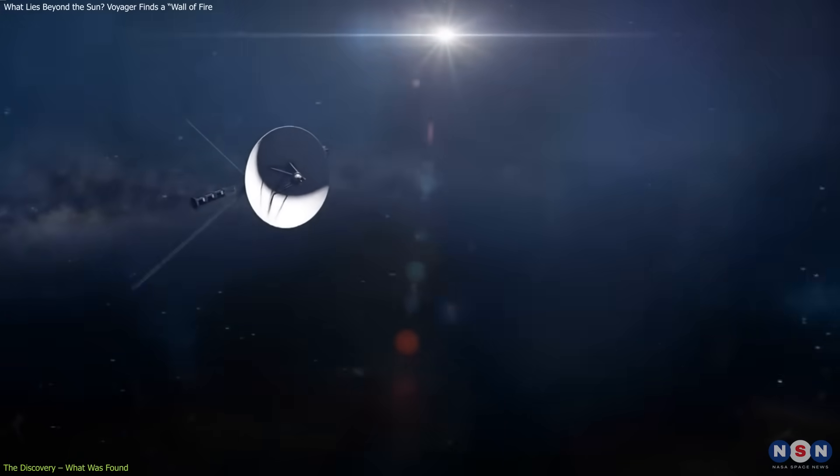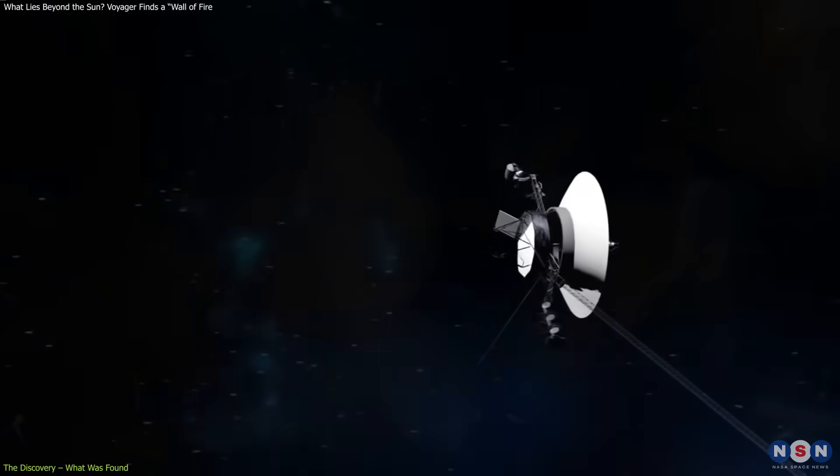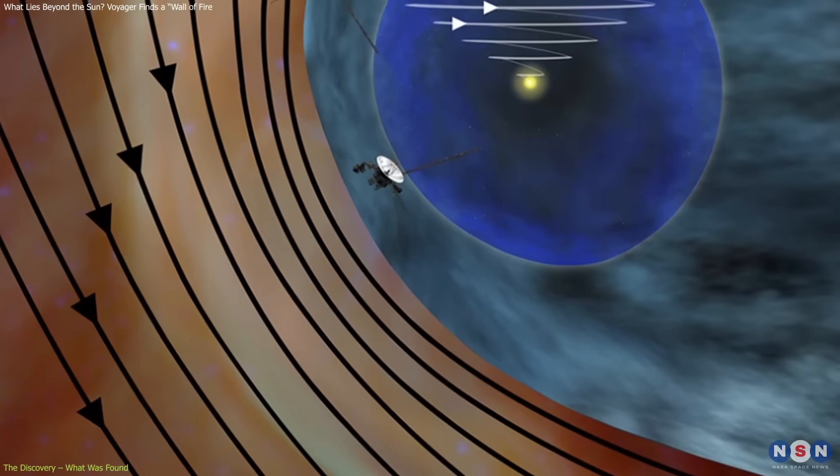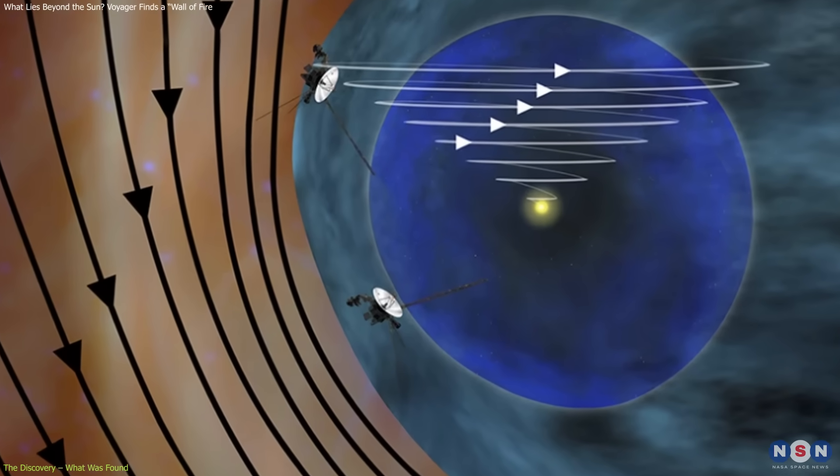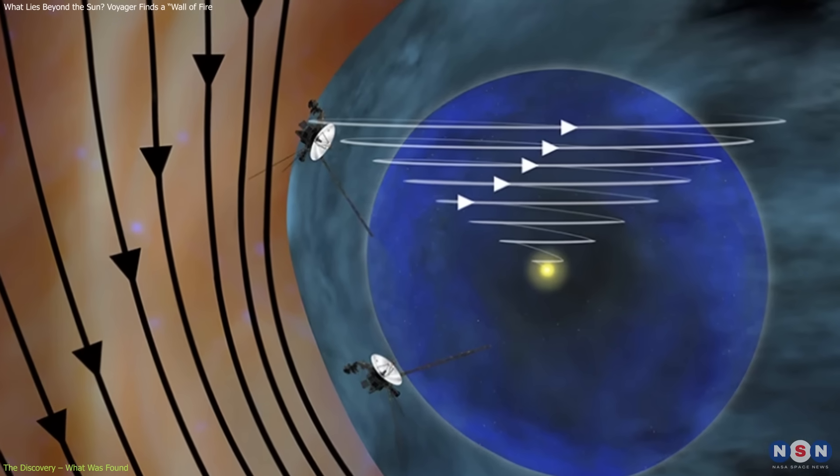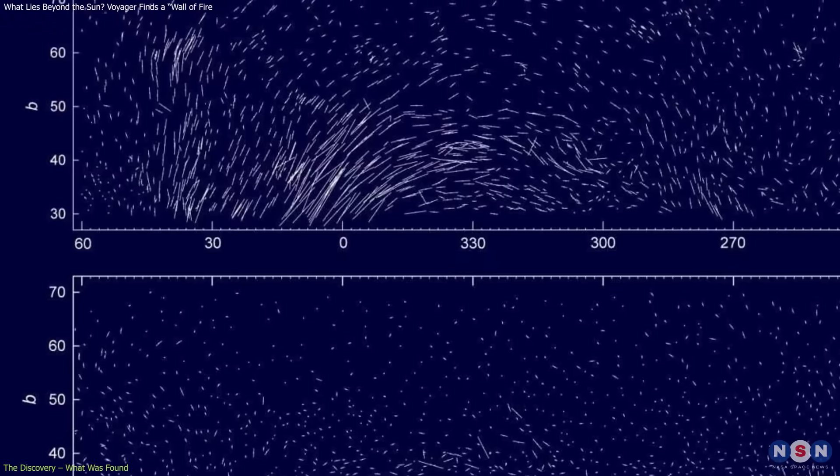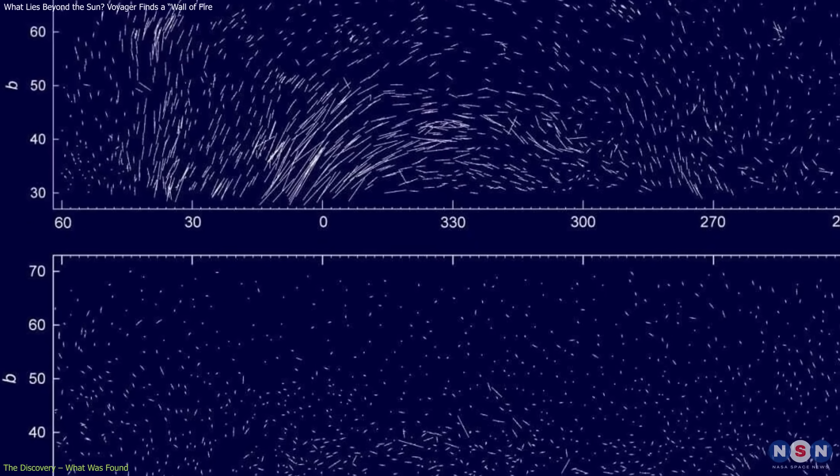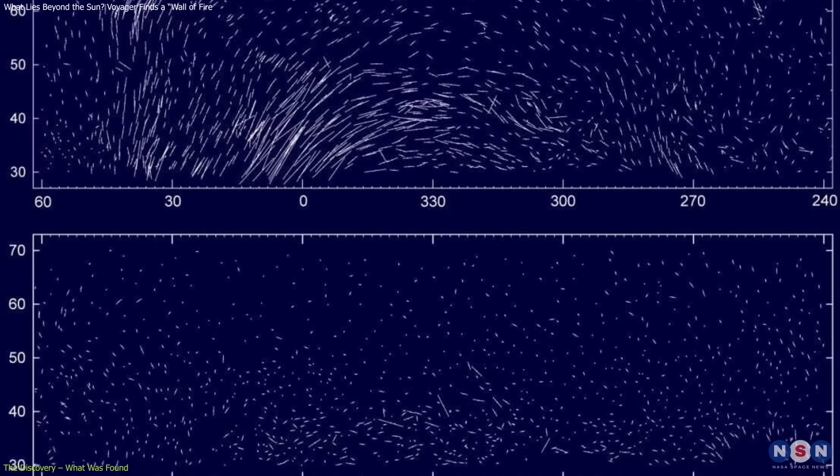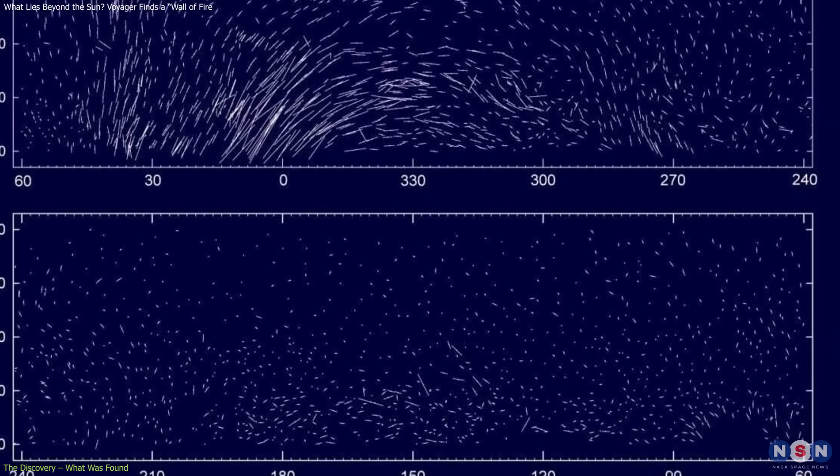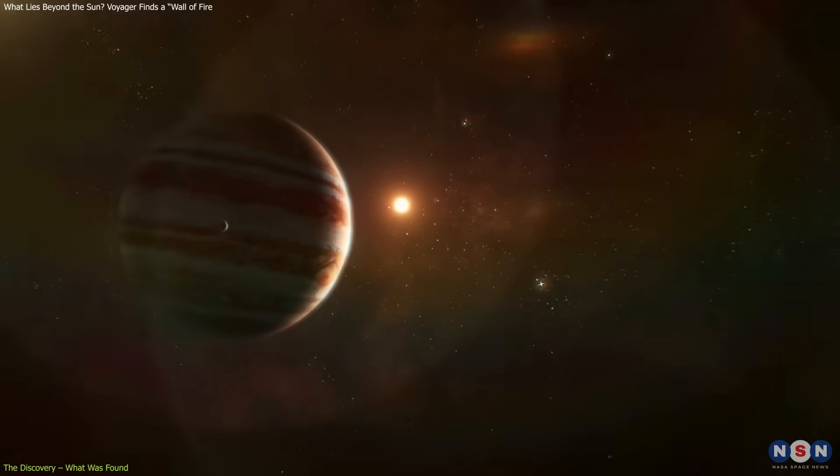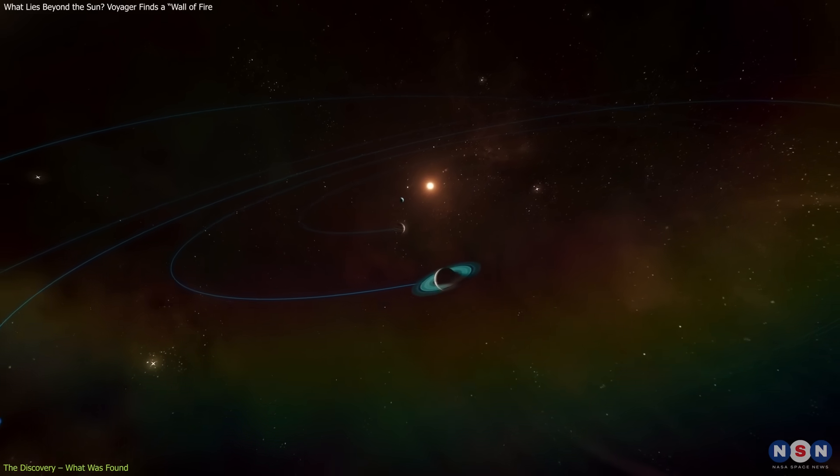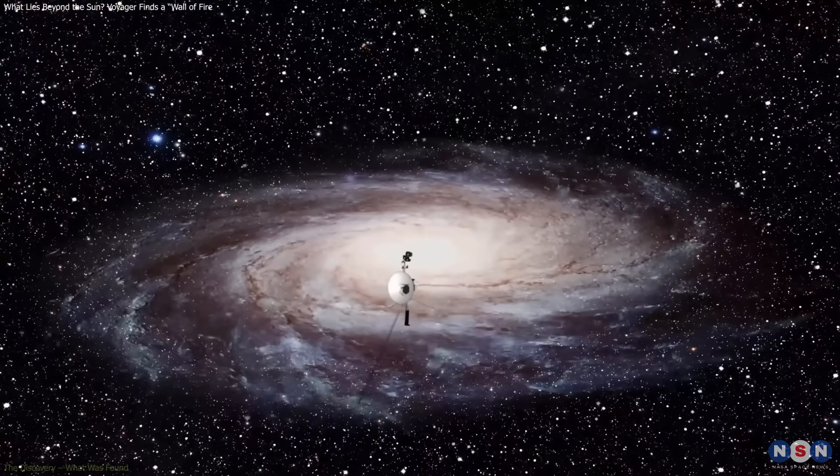The probes also detected another unexpected phenomenon. The interstellar magnetic field beyond the heliopause appears aligned with the sun's magnetic field inside it. This was surprising. Researchers had assumed these fields would be oriented differently, reflecting separate environments. Instead, the data suggest a deeper connection between our solar system and the galaxy beyond.